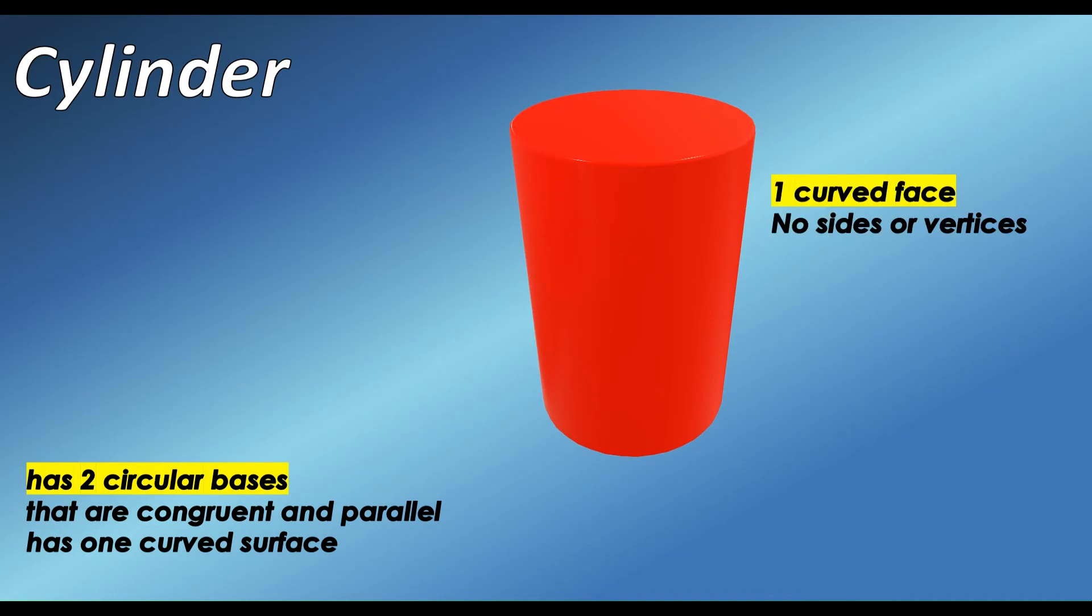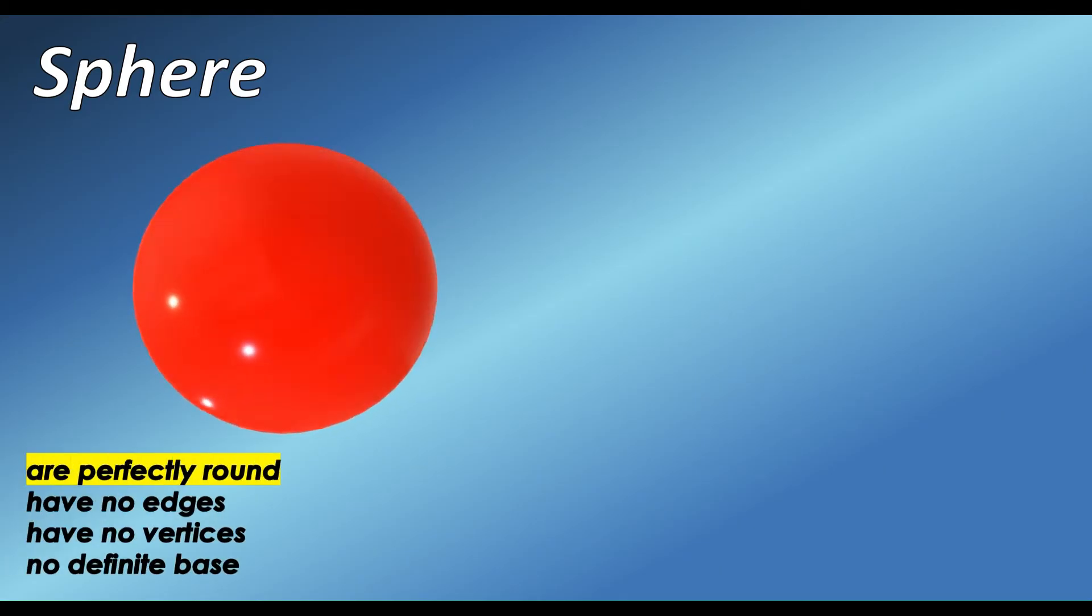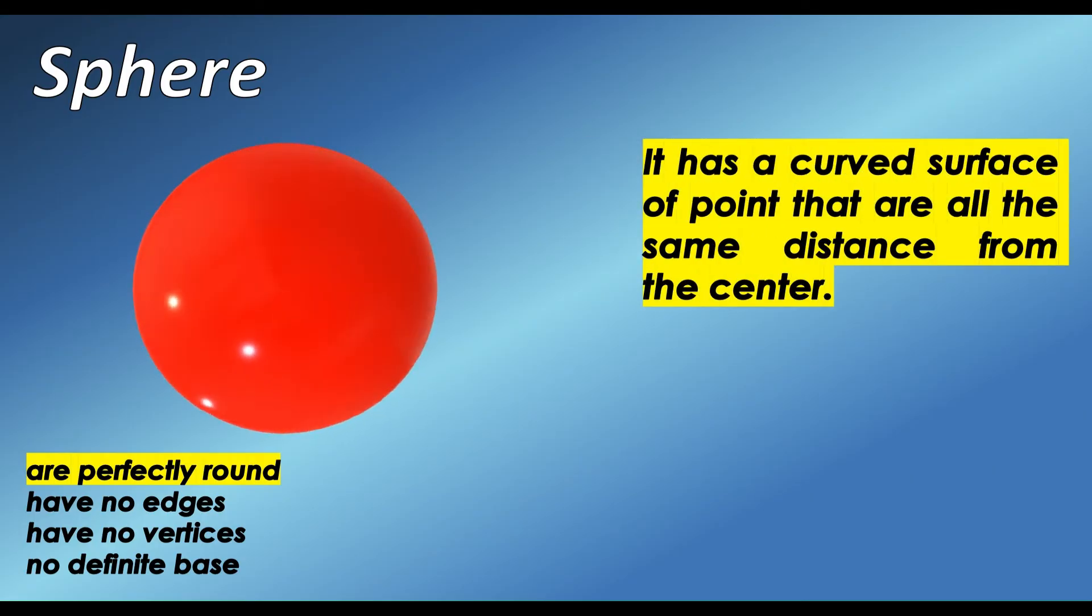Another solid figure we have is sphere. Spheres are perfectly round. Spheres have no edges, no vertices, and no definite base. A sphere has a curved surface of points that are all some distance from the center.